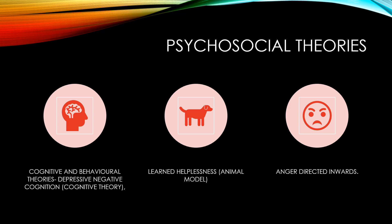Another theory is learned helplessness, which is basically an animal model. Rat studies showed that when there were repeated failures or repeated helplessness, the animals developed depression or depression-like symptoms — proving that learned helplessness also leads to depression. Some psychosocial theories also say that patients are not able to express anger outwardly, and this anger turned inwards leads to the development of symptoms of depression.